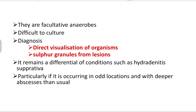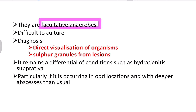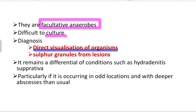The explanation: first of all, the actinomycosis organism is facultative anaerobic — this point is very, very important. It is facultative anaerobic. Second point: it is difficult to culture, and the diagnostic method is direct visualization of the organism under the microscope.